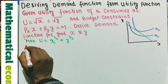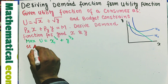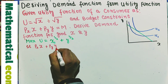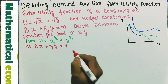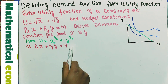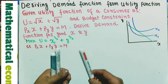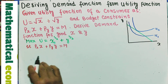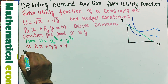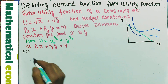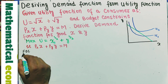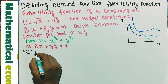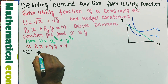The budget constraint is Px·x + Py·y = M, the total income of the consumer. With this budget, the consumer wants to maximize satisfaction. The first-order condition for maximization or optimization requires — this is also called the tangency condition.